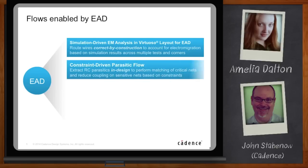The next piece is constraint-driven parasitic flow. Virtuoso has had the notion of constraints since its introduction in 2006 — things like how a device should be placed next to another device or how long a net should be. Now we're going to have electrical constraints. Instead of just physical ones like distance and symmetry, you can say this net should be no more than 10 ohms of resistance, or you want to match two nets in some way. That electrical constraint information is captured in the schematic by the circuit designer and passed forward to the layout designer, who can see in real time whether constraints are being met.